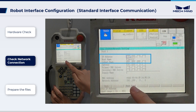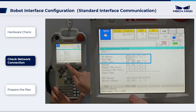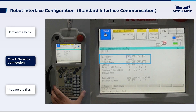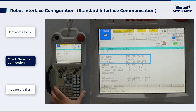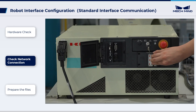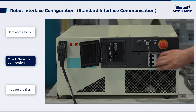If port 2 on the robot is used for network connection, press the next page to enter the port 2 network setting page. The IP address of the robot must be on the same subnet as the IP address of the IPC's Ethernet port. If a network gateway is used, set the gateway parameter, and then restart the controller.